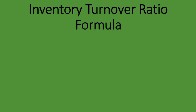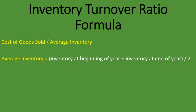Here is the formula: the inventory turnover ratio is cost of sales (or cost of goods sold) divided by average inventory. Cost of goods sold comes from the statement of comprehensive income (income statement), and average inventory comes from the statement of financial position (balance sheet). Average inventory is calculated as inventory at the beginning of the year plus inventory at the end of the year, divided by two. Inventory at the beginning of the year is the same as the closing inventory of the previous year.